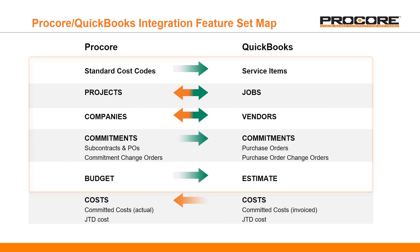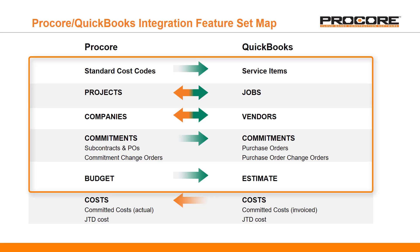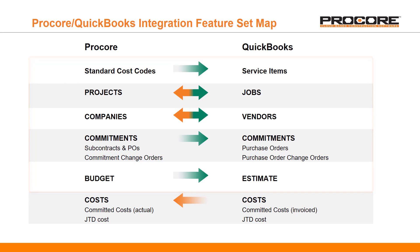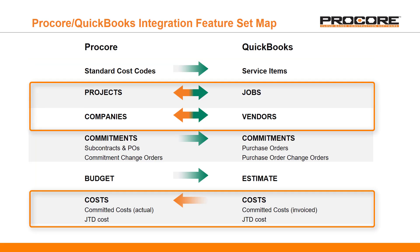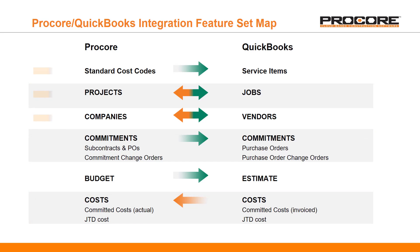On this diagram, you can see the items that have the green arrows next to them, pointing from Procore to QuickBooks, show you what can be entered in Procore and then exported or synced to QuickBooks. The rows that have the orange arrows pointing from QuickBooks to Procore show you what can be entered in QuickBooks and then imported or synced into Procore.